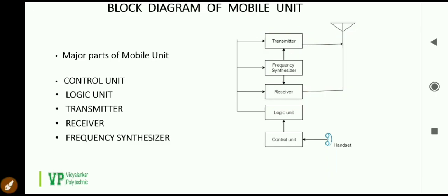The important feature of the transmitter is that its output power of 3 watts is controlled by the cell site and MTSO. The transmitter is a low power FM unit and it operates in a frequency range of 825 to 845 MHz. There are 666 transmitting channels which are spaced 30 kHz apart.